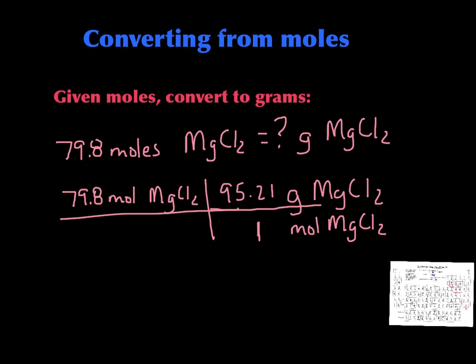We get that molar mass from the periodic table, which I've calculated to be 95.21 grams — that's for one mole. If you're having trouble with the calculation of the molar mass, go to the last video, the mass to mole video, and I go through how to calculate those. Then you just calculate it out. I got 7597.758 — you do 79.8 times 95.21 — and I rounded that to three sig figs in scientific notation: 7.60 times 10 to the third.